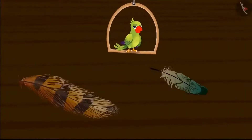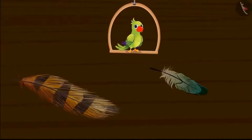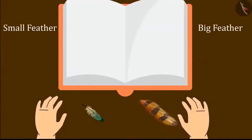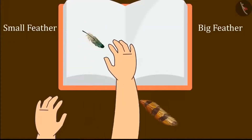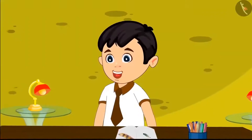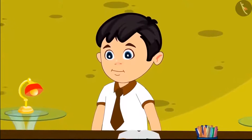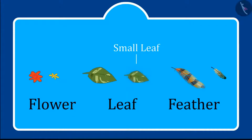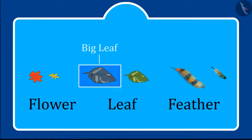Chotu asked the kids which feather is shorter. The kids got it right — this is the small feather. He pasted the small feather and then the big feather. All the work was done! Children, you saw how Chotu recognized big and small things — a small flower and a big flower, a small leaf and a big leaf, a small feather and a big feather.